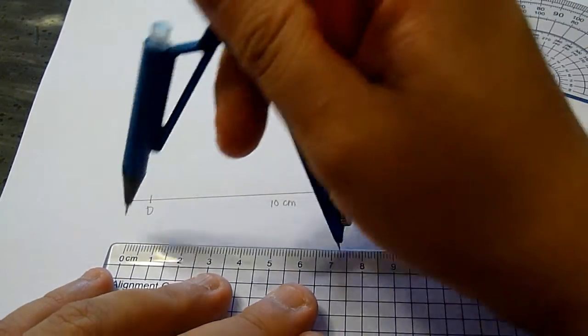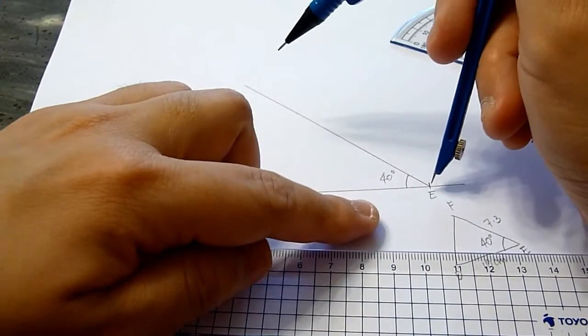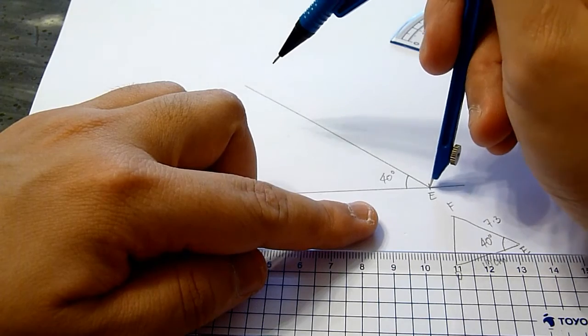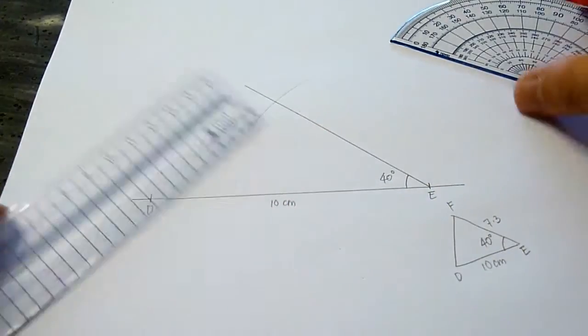Stretch the arm of the compass such that it is 7.3 cm. And now, place the short end at point E, mark an arc on the arm.